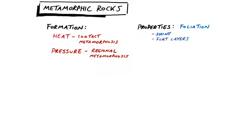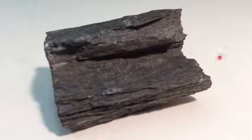The next thing foliation can mean is flat layers. If we take a look at this rock right here, this is made up of lots of little teeny tiny really flat layers.